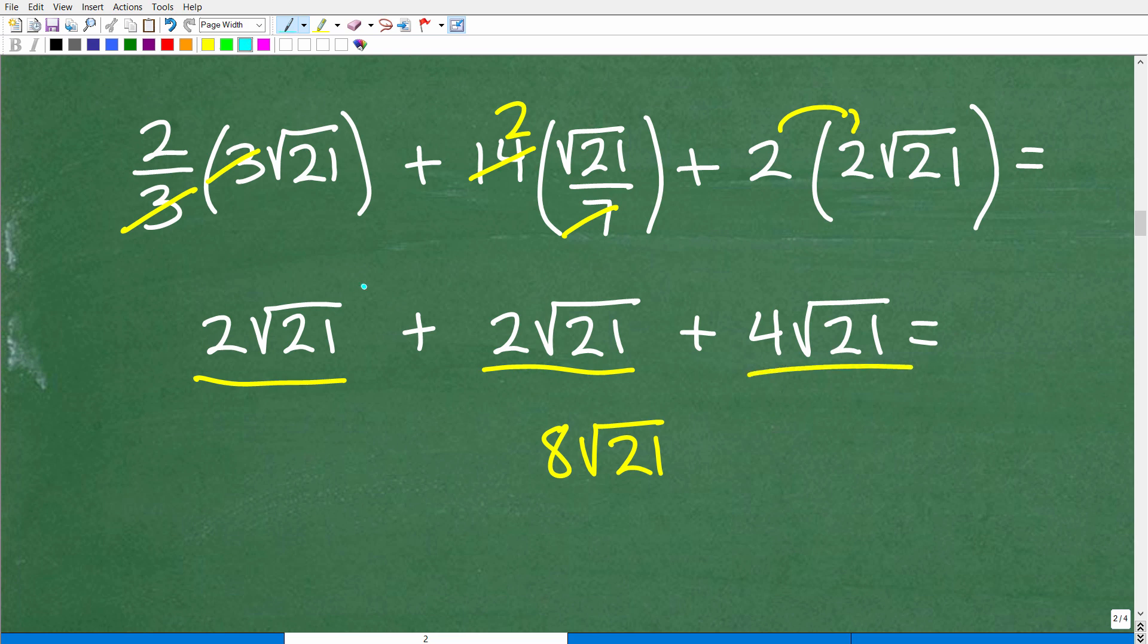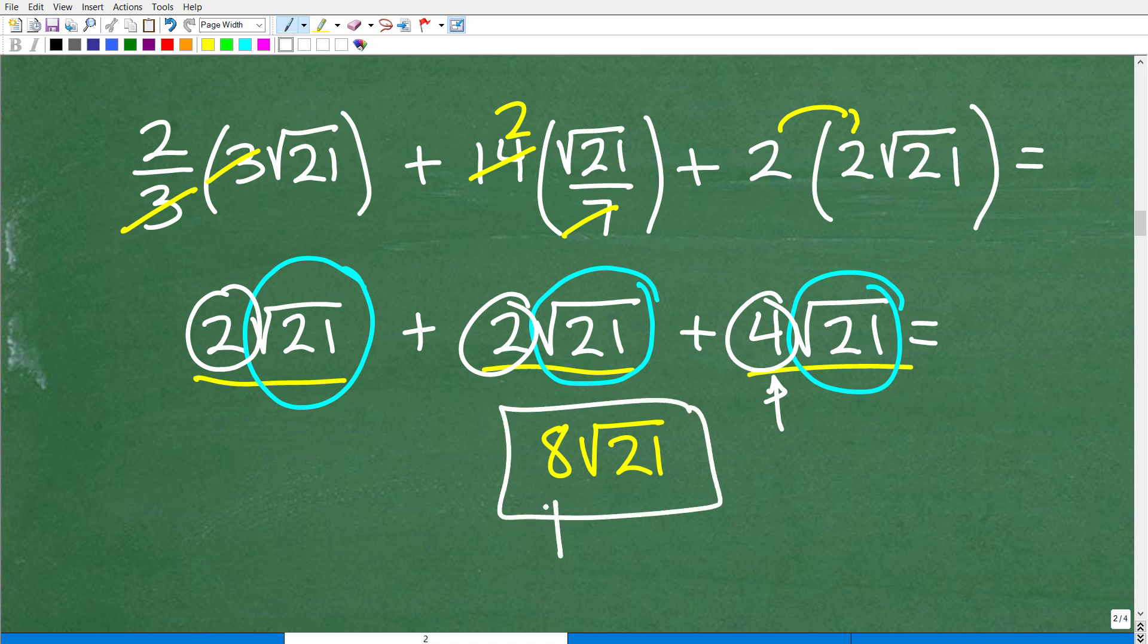All right, now let's notice here, all of these terms here are the square root of 21. So I can add these all up. So how many square roots of 21 do I have? Well, I have 4 here. I have 4 there. I have 2 here. I have 2 there. So 2, 2, and 4. Last time I checked is 8. So we have 8 square root of 21. And there is the answer.